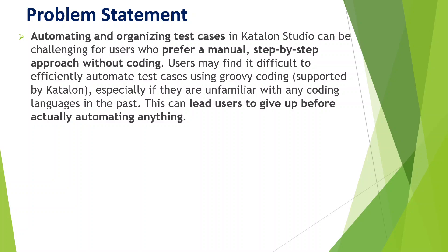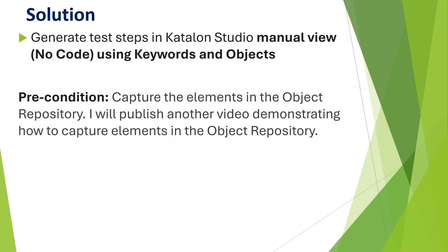This can lead users to give up before they actually start automating anything. What is the solution? We can generate test steps and automate test cases in Katalon Studio in manual view without any coding language, using keywords and objects. The precondition for this lesson is that you should be familiar with capturing elements in the object repository before you automate test cases. I'm going to publish another video demonstrating how to capture elements in the object repository.